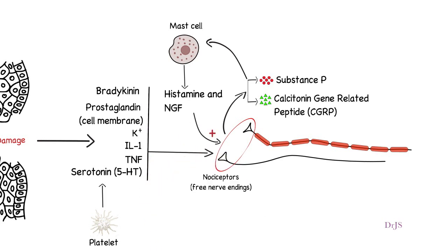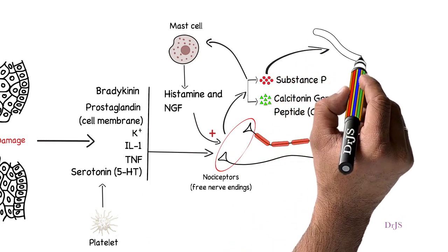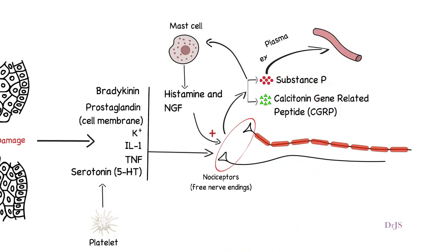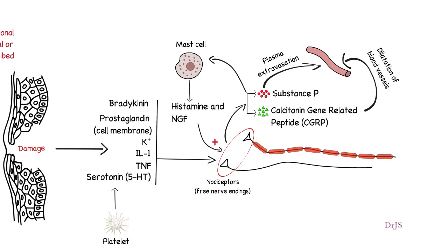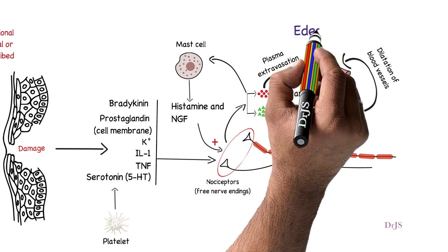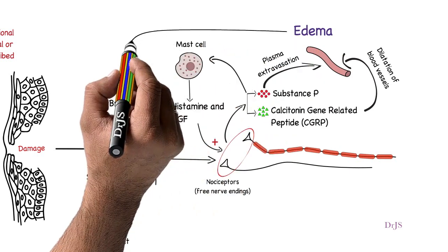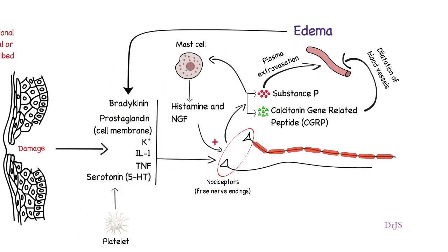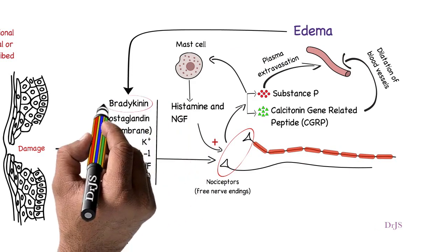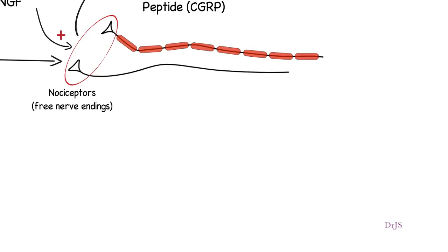These chemicals stimulate the free nerve endings. Substance P causes plasma extravasation, and calcitonin gene-related peptide causes dilatation of blood vessels. As a consequence, edema occurs. The edema further causes the release of bradykinin, which again stimulates the nociceptors.